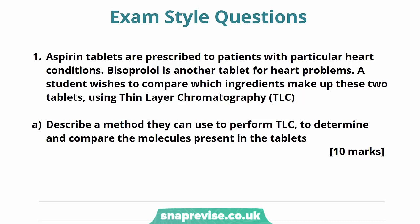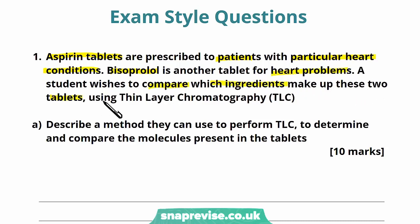We'll read through the questions and go through the different parts and the answers accordingly. It says aspirin tablets are prescribed to patients with particular heart conditions. Bisoprolol is another tablet for heart problems. A student wishes to compare which ingredients make up these two tablets using thin layer chromatography. Part A says describe a method they can use to perform TLC to determine and compare the molecules present in the tablets.